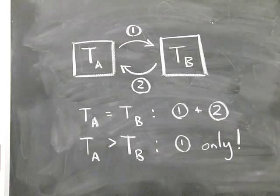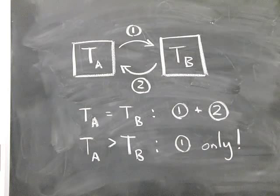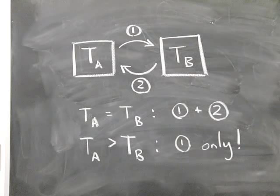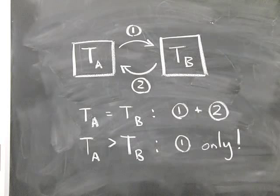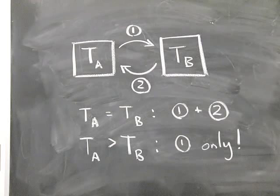So much for work. How about heat transfer? Suppose we have two systems with temperatures TA and TB. If the temperatures are equal, heat can flow from A to B or from B to A — in either direction equally well. But if system A is warmer than system B, heat only flows in one direction: from A to B. So heat flow between two systems at the same temperature is reversible, but heat flow between systems at different temperatures is not reversible — it only goes from higher to lower temperature.